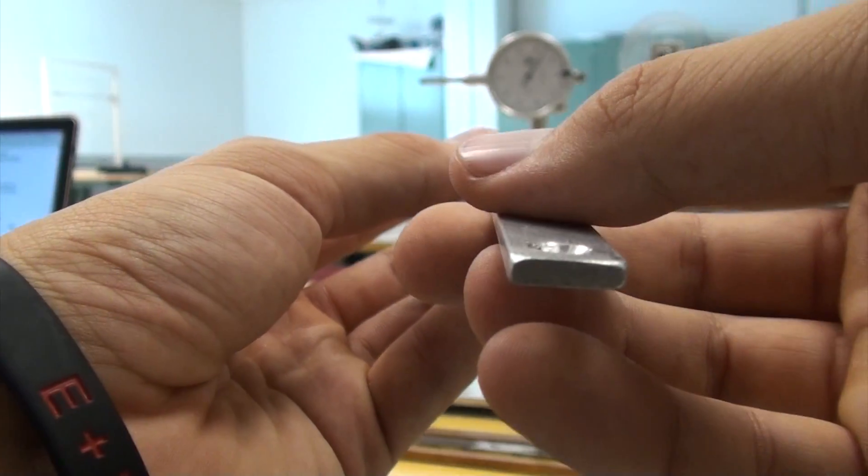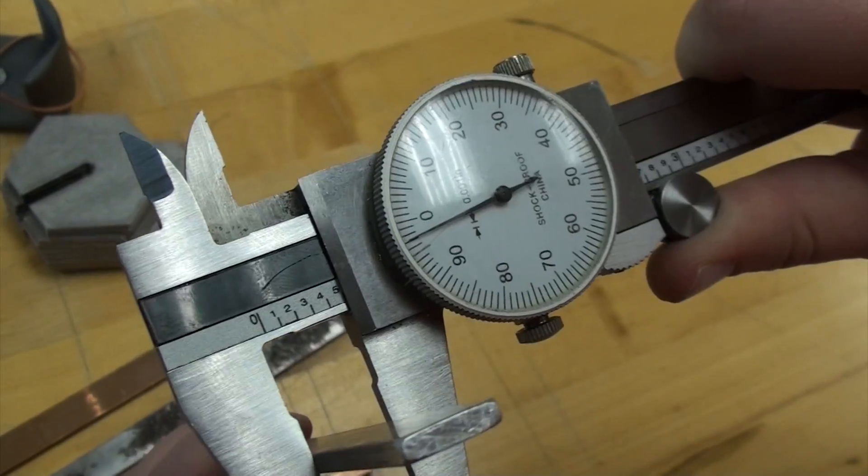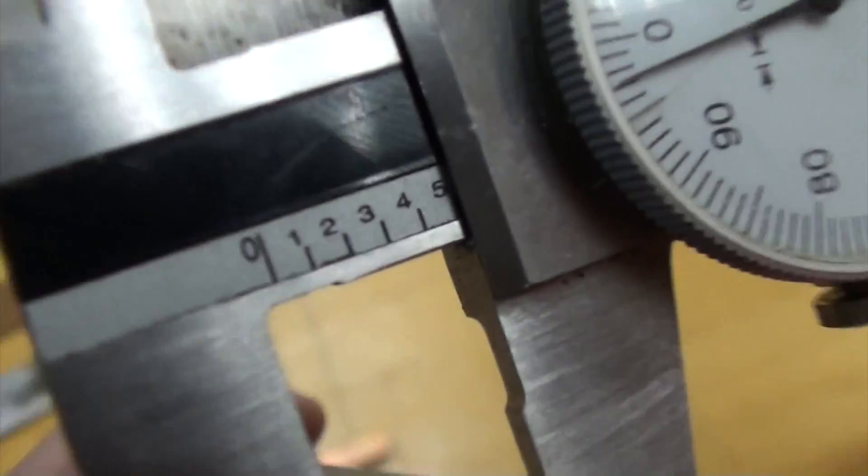For task one start by taking the rectangular aluminum beam. Measure the width and thickness of this beam using the dial caliper as shown.